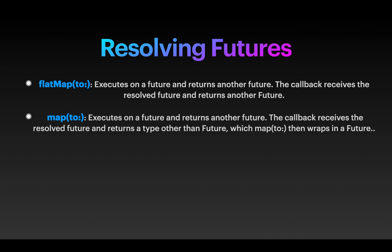Vapor provides a number of convenience functions for working with futures to avoid dealing with them directly. Since we wrapped our object inside a future, we need to resolve it back to the actual data after the response is received. This is done using two main functions: flatmap2 and map2. Flatmap2 executes on a future and returns another future — the callback receives the resolved future and returns another future. Map2 also executes on a future and returns another future, but the callback receives the resolved future and returns a type other than a future, which map2 then wraps in a future.